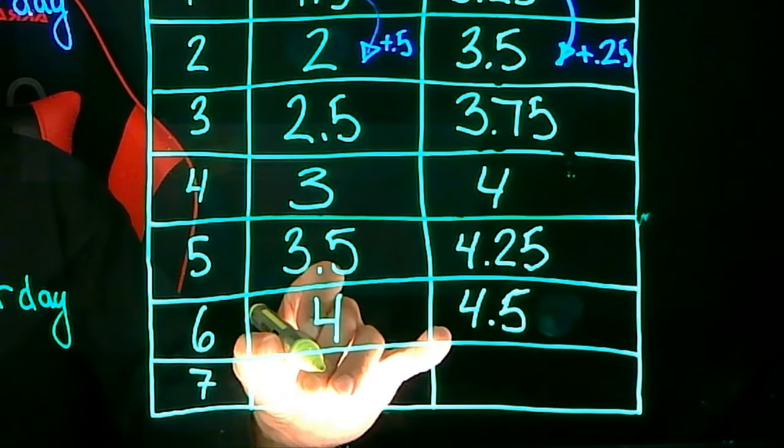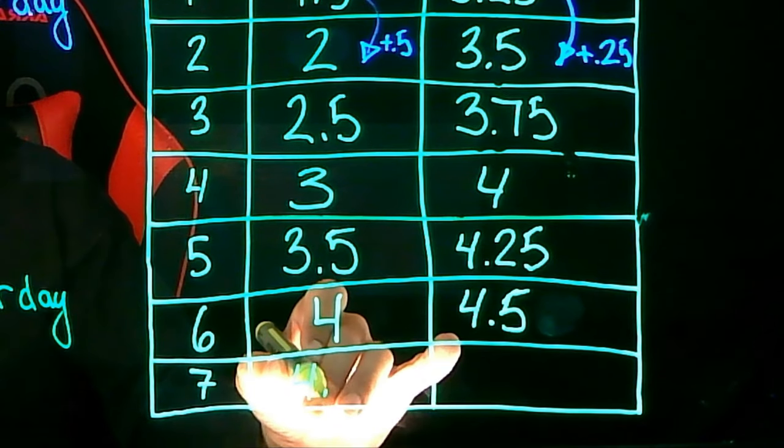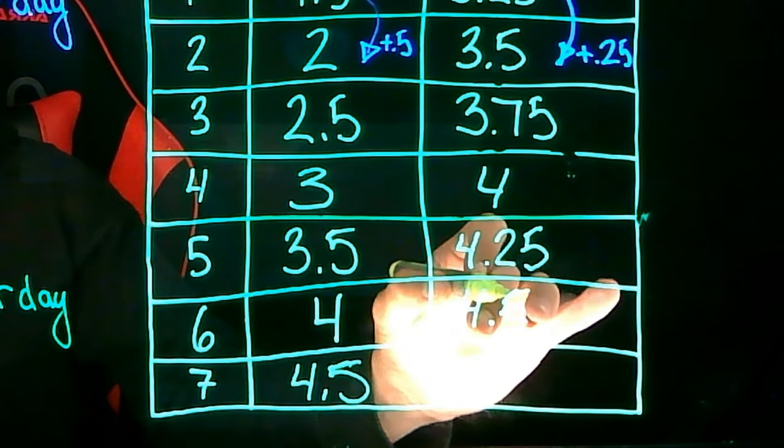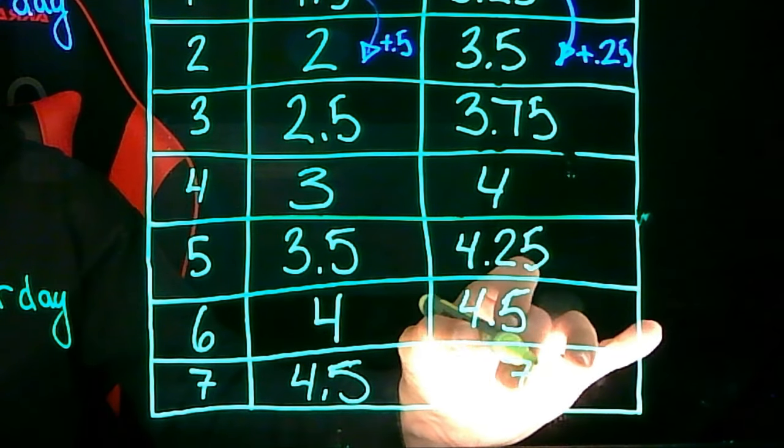And on day seven, plant A will have a height of 4 plus 0.5 or 4.5 inches. And plant B will have a height of 4.5 plus 0.25 or 4.75 inches.